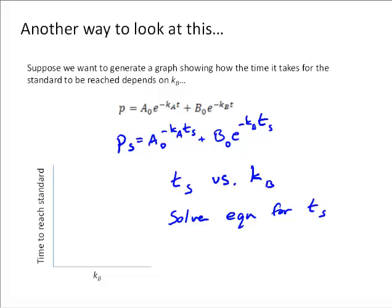We know that from our previous results, we expect some sort of curve that looks like that. Because we know as kᵦ increased, the time to reach the standard decreased. But it did hit some sort of limit, and we would expect to see that. So let's try solving that equation.